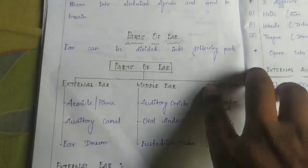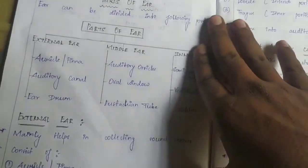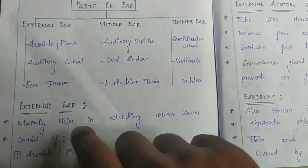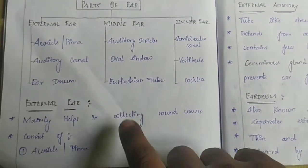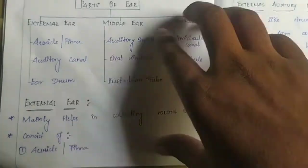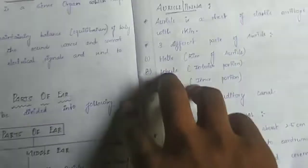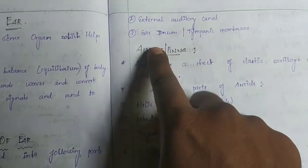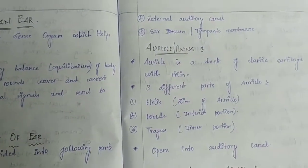The external ear is the main part responsible for collecting sound waves. It has three parts: the auricle, the external auditory canal, and the ear drum. Let's check the auricle.